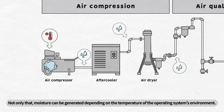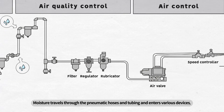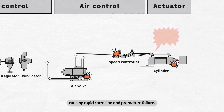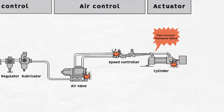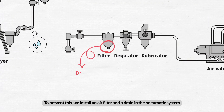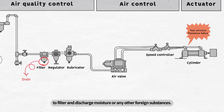Not only that, moisture can be generated depending on the temperature of the operating system's environment. Moisture travels through the pneumatic hoses and tubing and enters various devices, causing rapid corrosion and premature failure. To prevent this, we install an air filter and a drain in the pneumatic system to filter and discharge moisture or any other foreign substances.